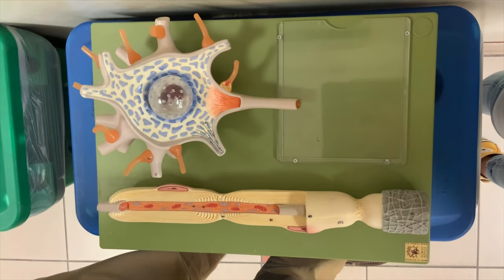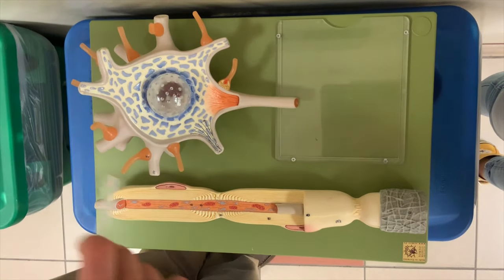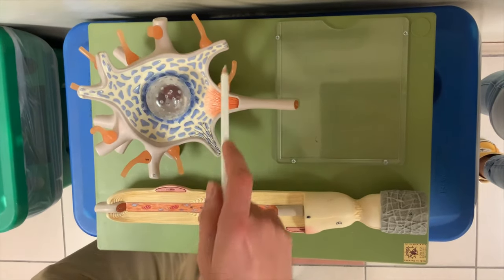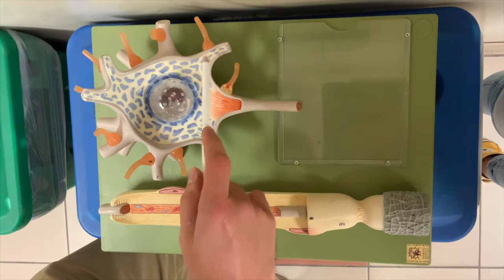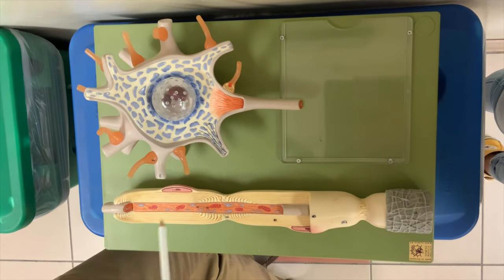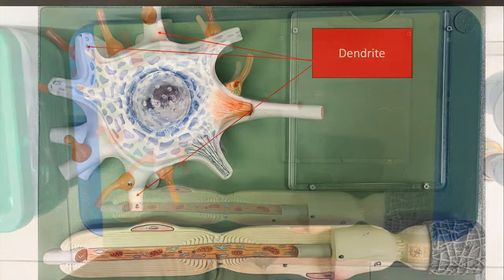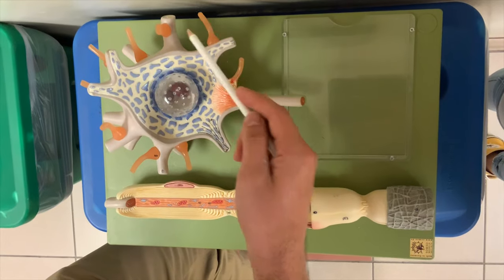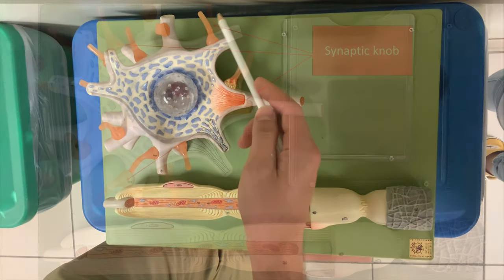On the soma, we have the dendrites. We have all these dendrites that receive the signal. We also have these synaptic knobs.